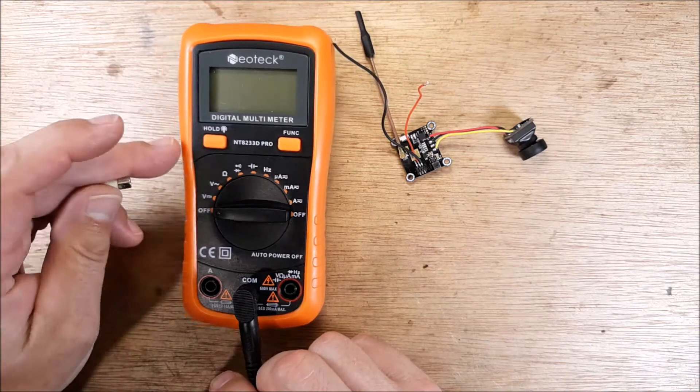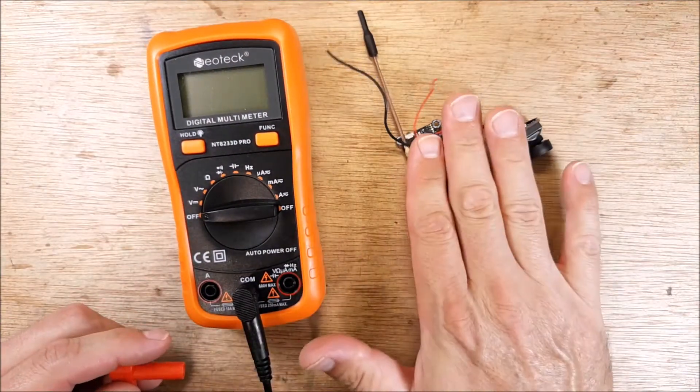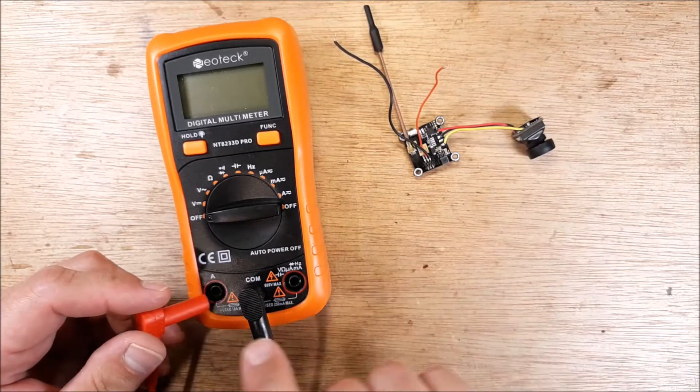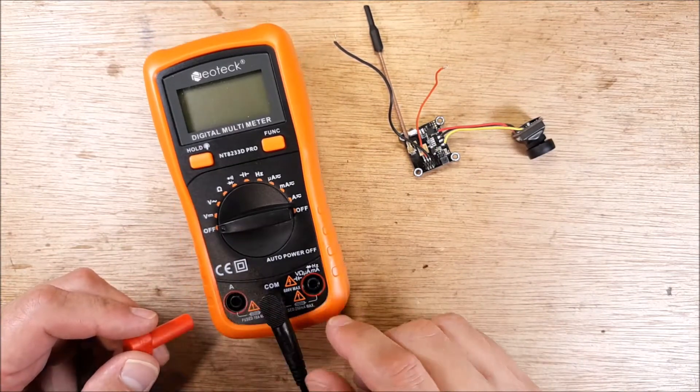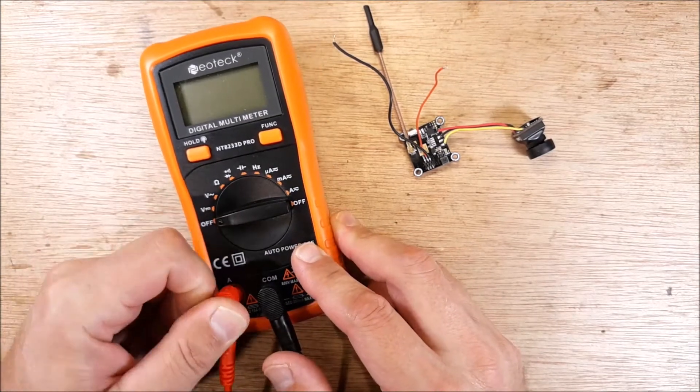You'll smoke it, you'll pop the fuse inside the meter. This is fused for 10 amps, no problem. If you don't have a multimeter that can do this, then you can't do what we're doing right now. So let's plug in our multimeter.